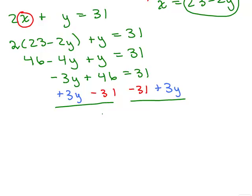So this gives me 15 equals 3y, and then we'll just divide both sides by 3, and that'll give me 5 equals y, or y equals 5.